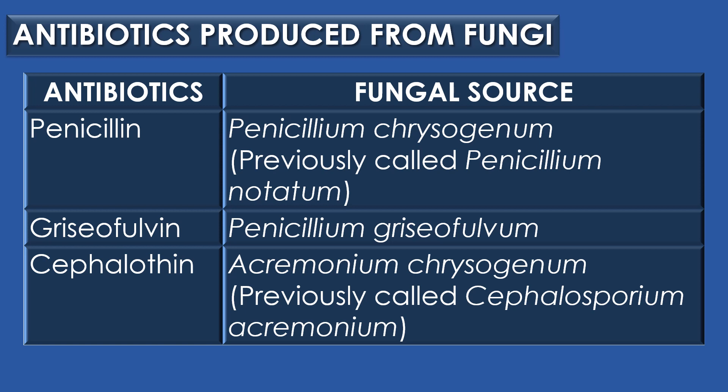Next, the sources of antibiotics and antibiotics produced from fungi. Majorly, three antibiotics are produced from fungi: penicillin, griseofulvin, and cephalothin. Penicillin is produced from Penicillium chrysogenum, previously called Penicillium notatum. Griseofulvin is produced from Penicillium chrysogenum. And cephalothin is produced from Acremonium chrysogenum, previously called Cephalosporium acremonium.